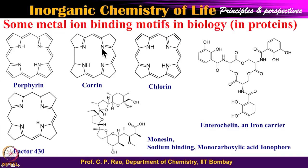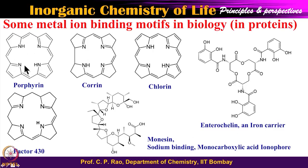There are also some additional motifs found in biological systems other than amino acid side chains. These are porphyrin, chlorin, and factor 430. Chlorin here is a term — not related to the element Cl — and is found in some nickel enzymes. Factor 430 is also found for nickel. Chlorin is found for cobalt, and porphyrin is found for iron. So these are special motifs for iron enzymes, cobalt enzymes, and nickel enzymes — the metal ion binds to these special motifs, which in turn are bound to the protein.